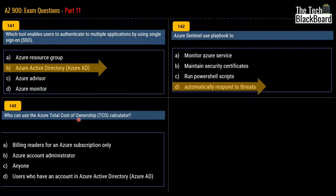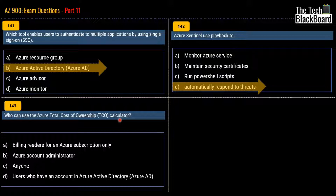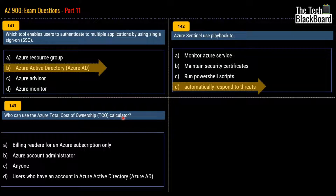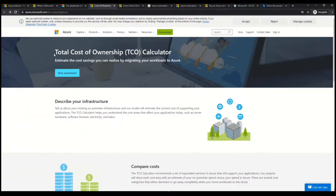Question 143 is about Azure Total Cost of Ownership. It asks: who can use the Azure Total Cost of Ownership (TCO) Calculator? The TCO Calculator helps you estimate the cost of operating your solution on Azure over time instead of running it on-premises. For example, if a company wants to move an application from an on-premises data center to the cloud, the first question is how much it would cost. The Azure TCO Calculator enables you to estimate the cost of moving your entire solution from an on-premises data center to Azure cloud.